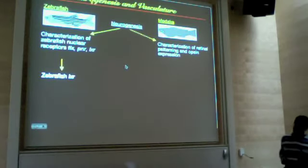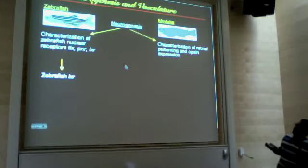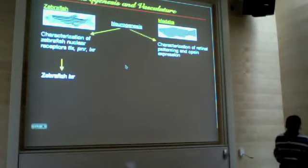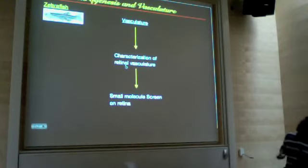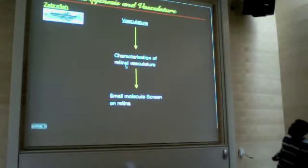I'll be presenting two different processes: neurogenesis and vasculature. Neurogenesis in zebrafish is quite well established, and we use that information to characterize three different nuclear receptors — TLX, PNR, and LXR — and we further use knockdown technology to look at the importance of LXR in zebrafish eye development. We also use medaka as a comparative model. For the second part, we establish the timeline of retinal vasculature of zebrafish and develop a pharmaceutical tool for a small molecule screen using retinal vasculature.